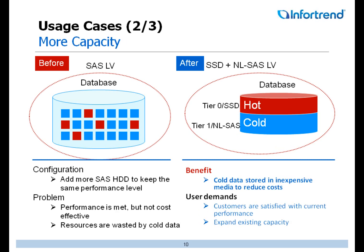In Scenario 2, users require a certain degree of performance while mass data storage is the focus. Therefore, infrequently accessed data can move to the nearline SAS tier level. This tiering configuration offers more capacity while sustaining a minimum performance level.